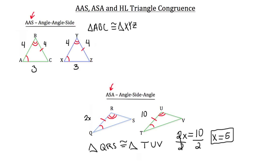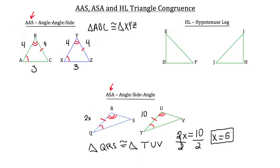Now let's take a look at hypotenuse leg triangle congruency. With this postulate, you need to prove that the two hypotenuses are congruent and one leg is also congruent between both triangles. Since we're working with the hypotenuse leg theorem, both triangles must be right triangles. If DEF and HIJ are right triangles, then hypotenuse EF is congruent to hypotenuse IJ.